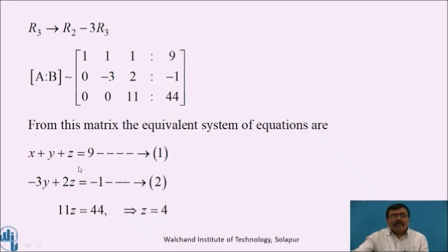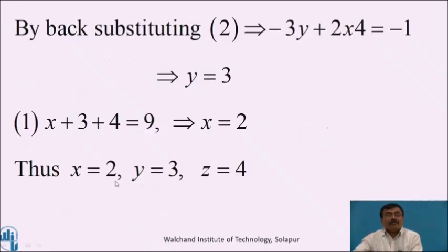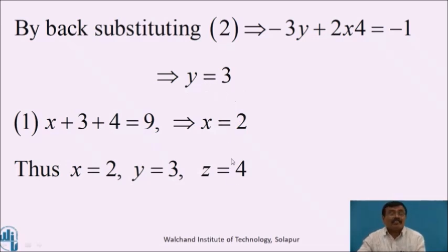From this matrix, the equivalent system of equations are: x plus y plus z equals 9 (equation 1); minus3y plus 2z equals minus1 (equation 2). From the third row, 11z equals 44, which implies z equals 44 divided by 11, that is z equals 4. By back substitution into equation 2: minus3y plus 2 times 4 equals minus1. Simplifying, y equals 3. Substituting y equals 3 and z equals 4 into equation 1: x plus 3 plus 4 equals 9, which gives x equals 2. Thus, x equals 2, y equals 3, and z equals 4 is the required solution.